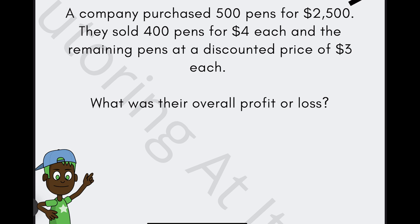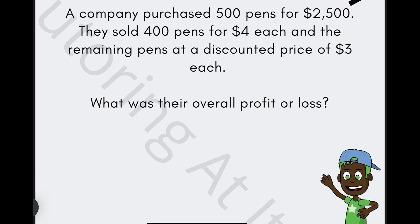A company purchased 500 pens for $2,500. And they sold 400 pens for $4 each and the remaining pens at a discounted price of $3 each. So what was their overall percentage profit? Well, to determine the overall profit or loss of the company, we need to calculate the total cost and total revenue. So let's look at the cost per pen.